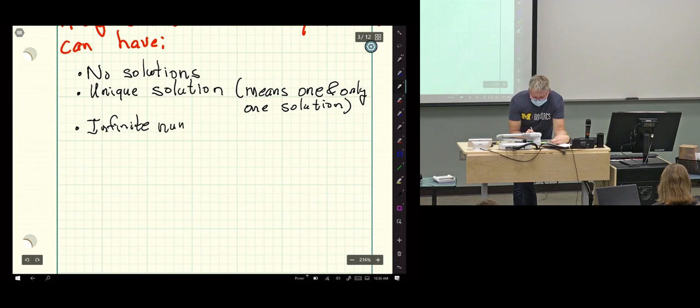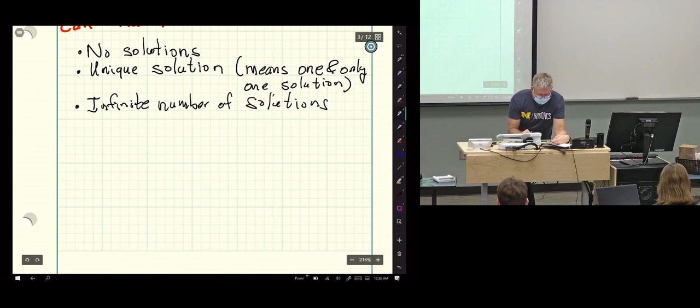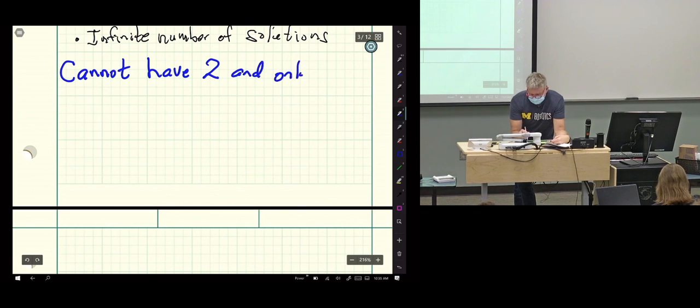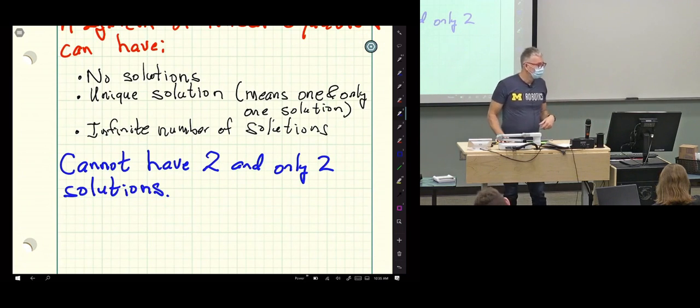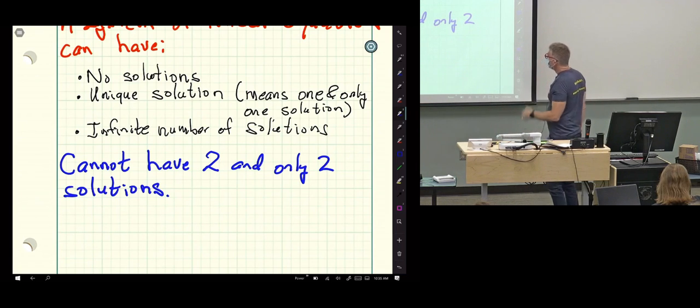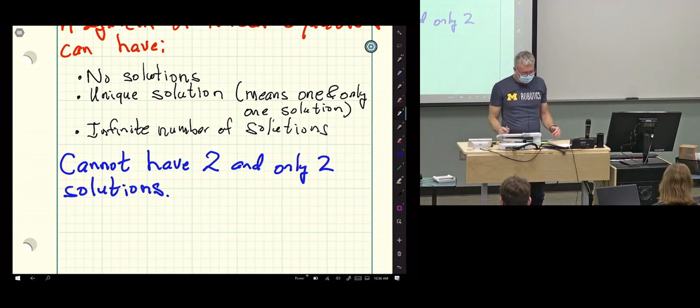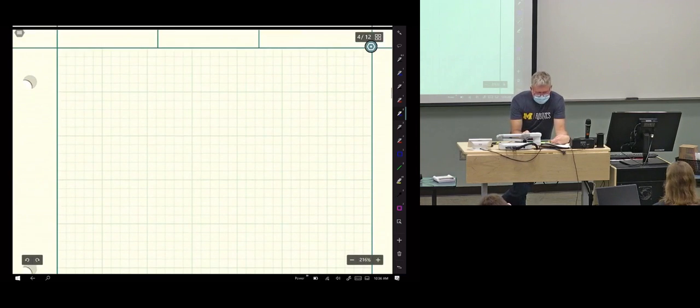The other thing is you can have an infinite number of solutions. But here's the thing. Cannot have two and only two solutions. Cannot have five and only five. Cannot have seven and only seven. It's either zero, one, or infinity. There's nothing in between. That's the number of solutions.